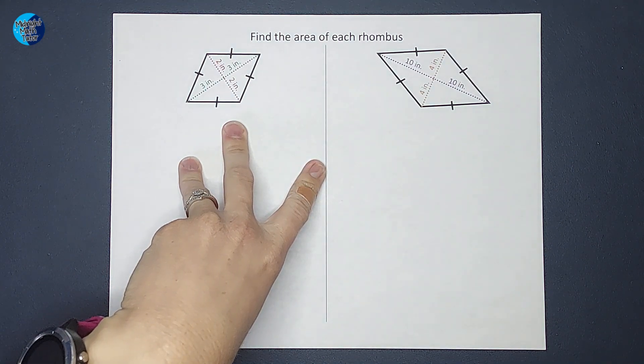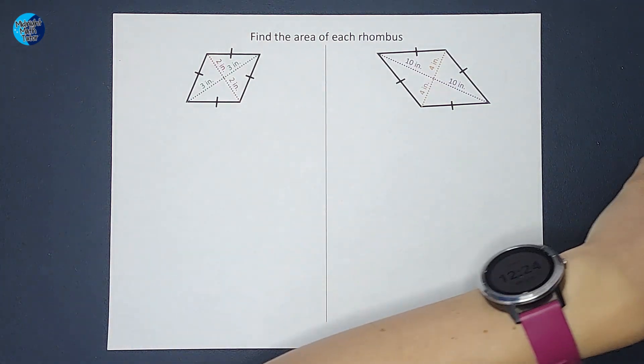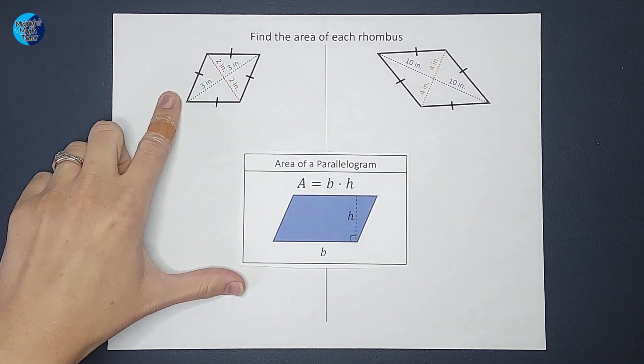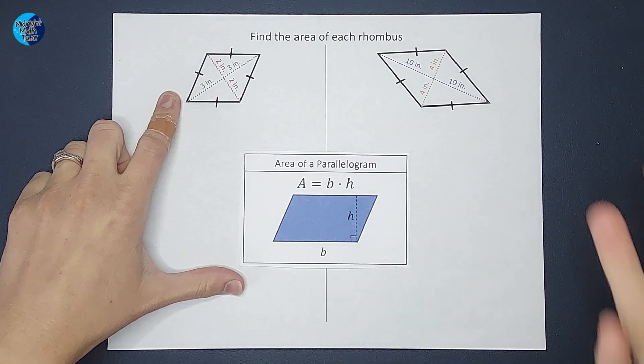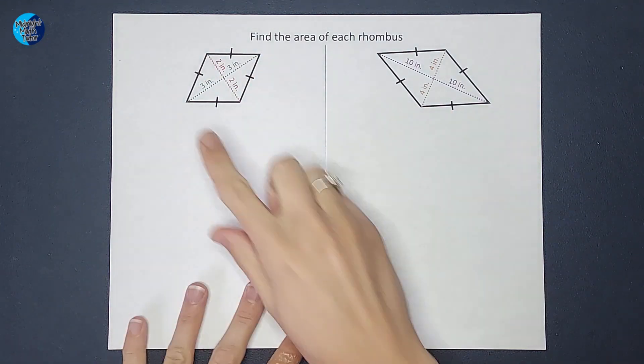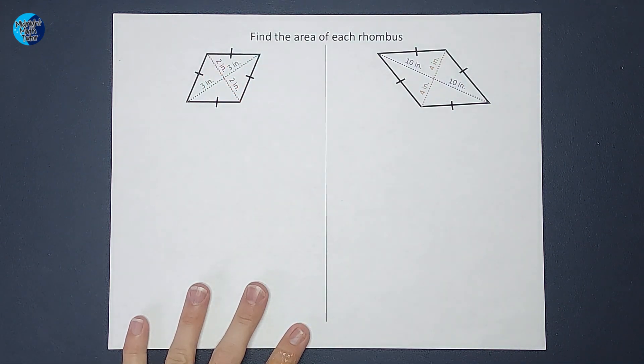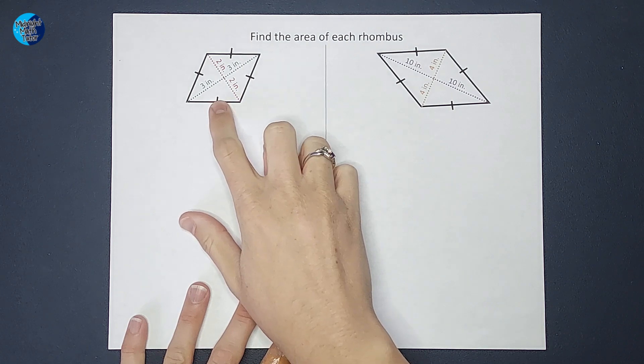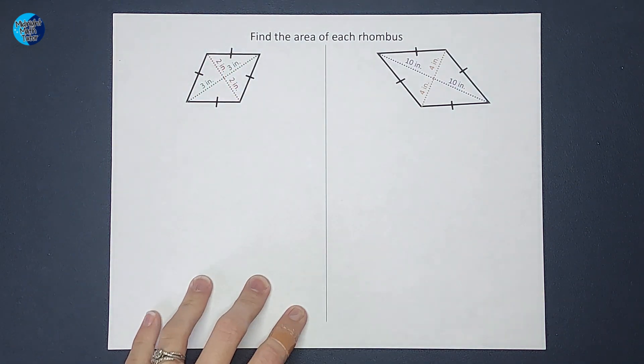So a rhombus is a special parallelogram. So actually, if you had the base and height of your rhombus, you could just do the area for a parallelogram. As you can see, we do not have the base and the height here. We have these diagonals is what we call them. So a rhombus is a parallelogram where all the sides are the same.